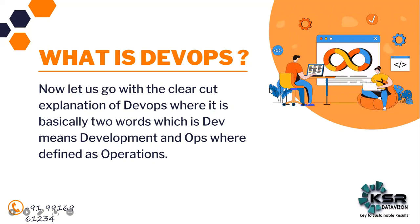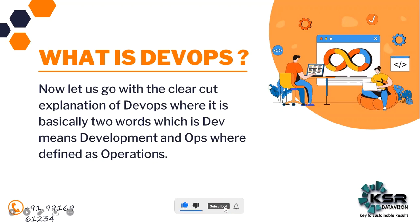When you observe the DevOps picture, it shows there is no end to the process - it is a continuous flow. After every code change, right up through the development part, the DevOps engineer is continuously implementing multiple tools, which makes the process of delivering products faster and cleaner.